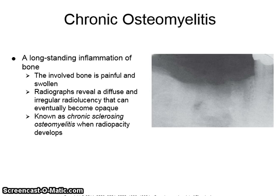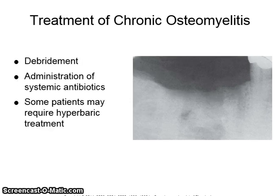Chronic osteomyelitis is a long-standing inflammation of bone. The involved bone is painful and swollen. Radiographs reveal a diffuse and irregular radiolucency that can eventually become opaque. This is known as chronic sclerosing osteomyelitis when a radiopacity develops in the bone. Treatment includes debridement, administration of systemic antibiotics, and some patients may require hyperbaric treatment.